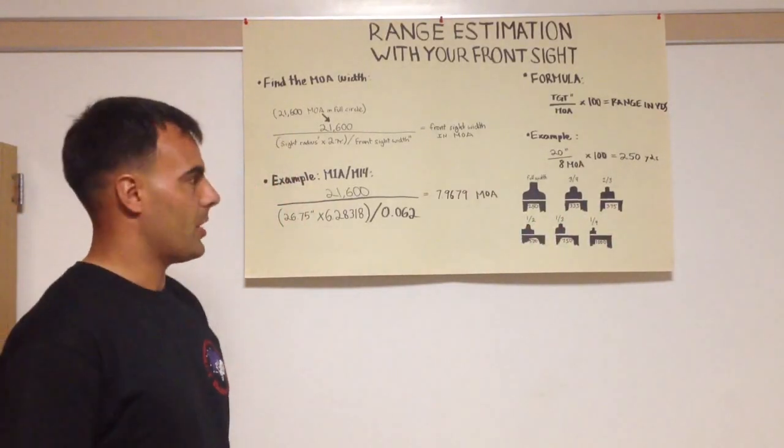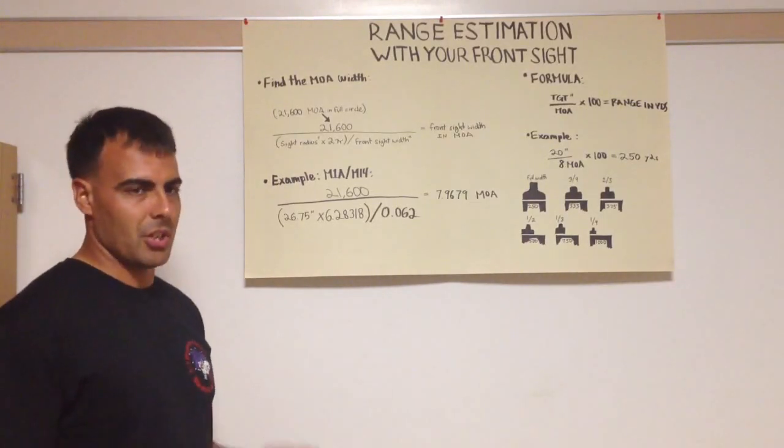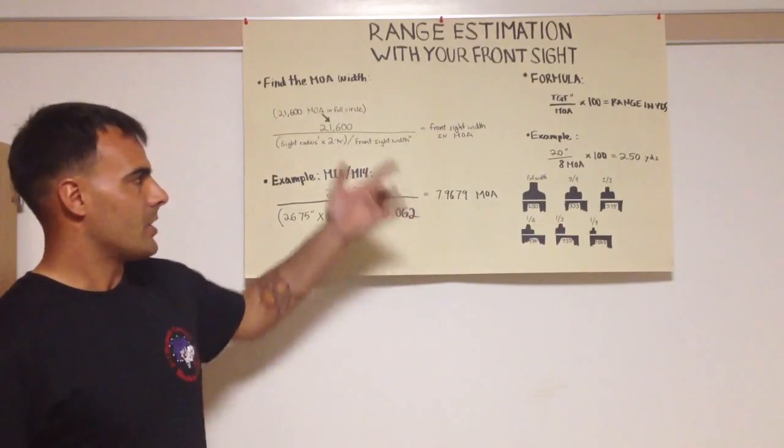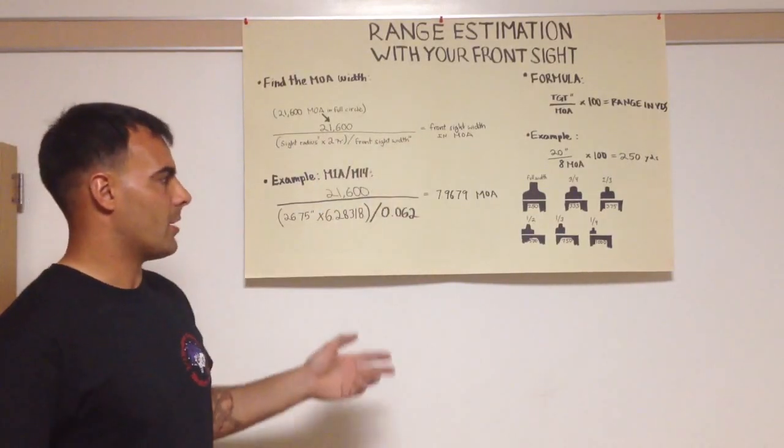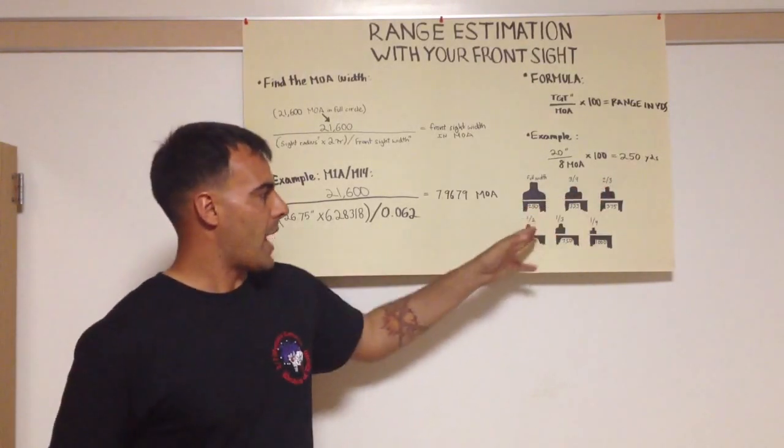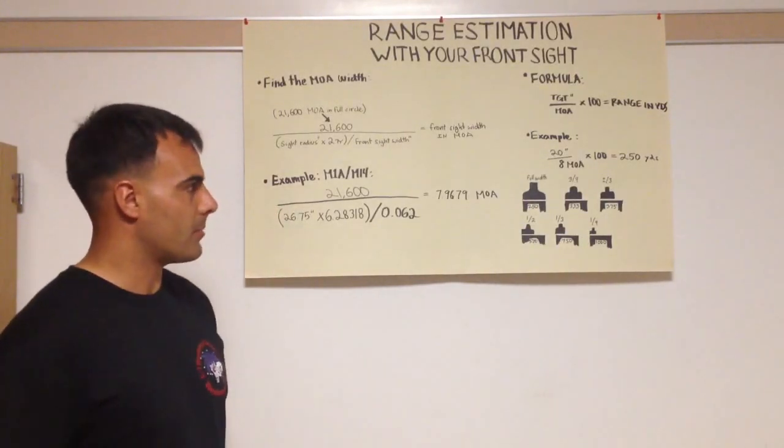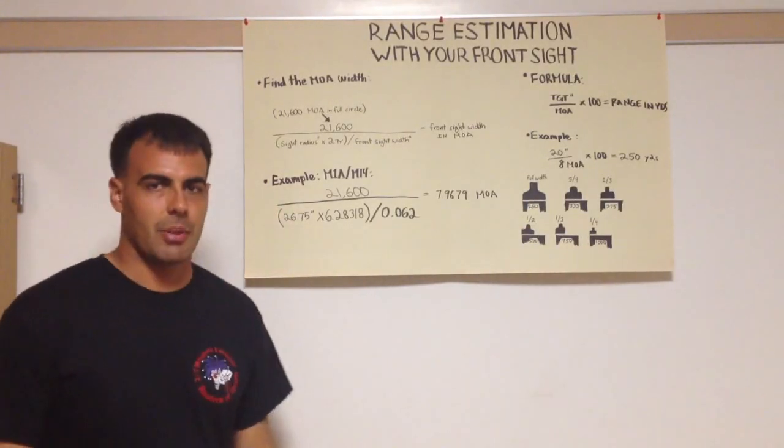But aside from that, that's all you really need. Take a standard target, whatever target you like to shoot, if it's a 12 inch gong or a 20 inch wide IPSC silhouette, whatever your target is, just take that and try putting it at these different fractions here so you can get these memorized and you'll have a quick way to range estimation with your front sight. So that's it, thanks for watching.